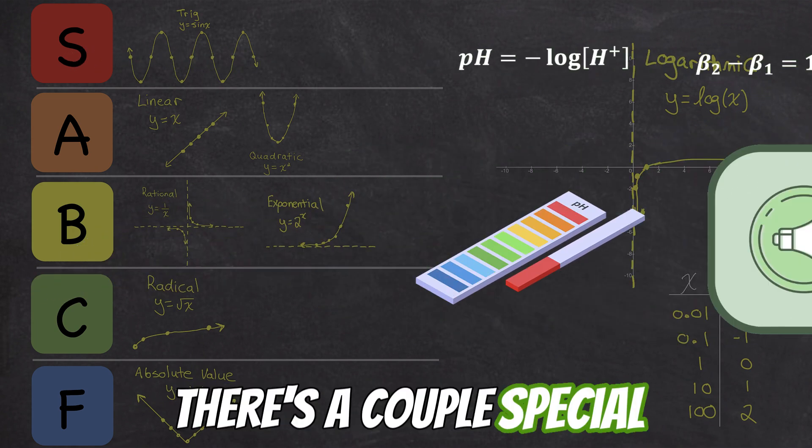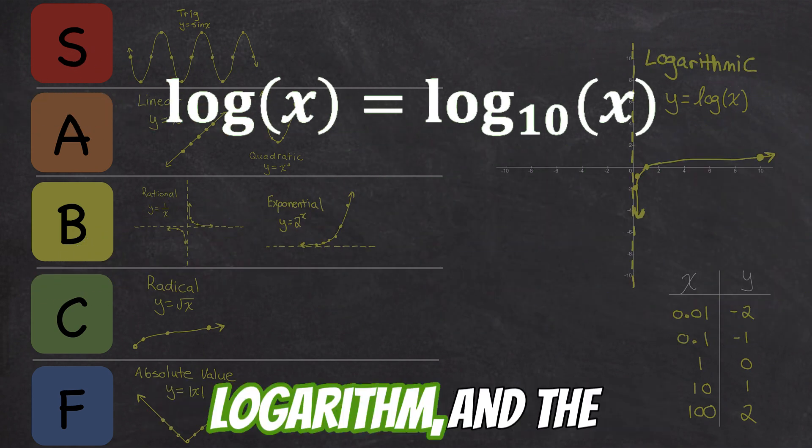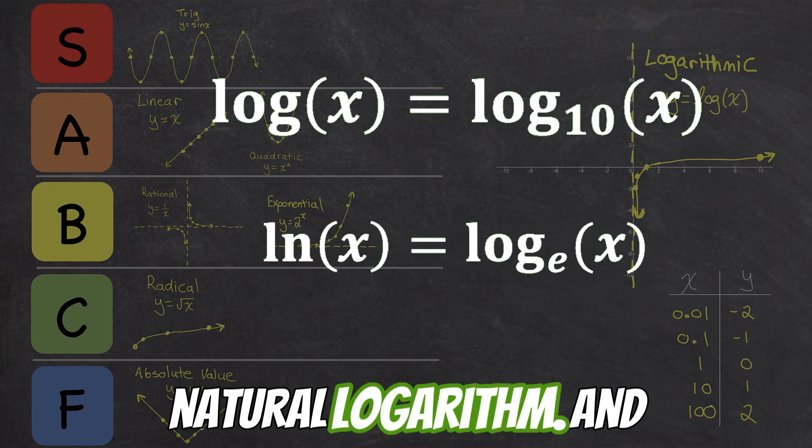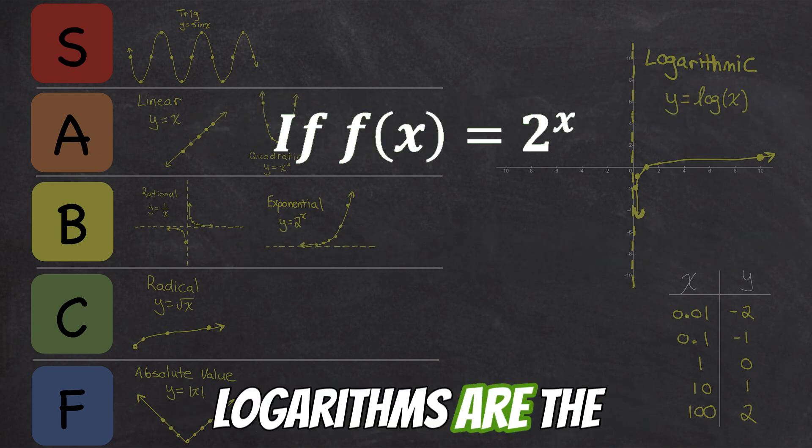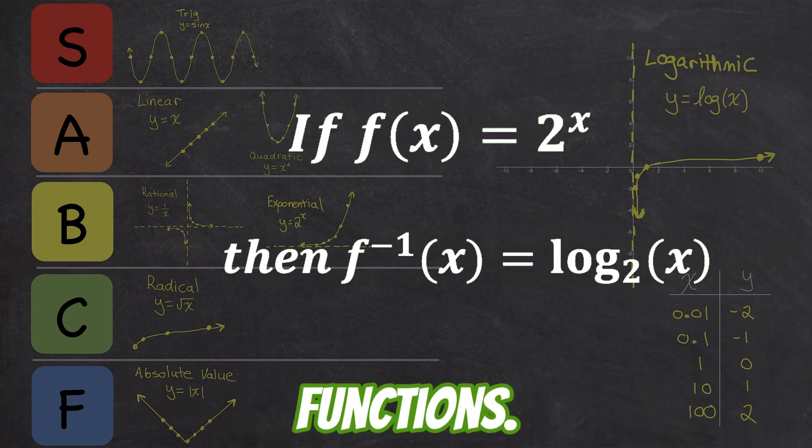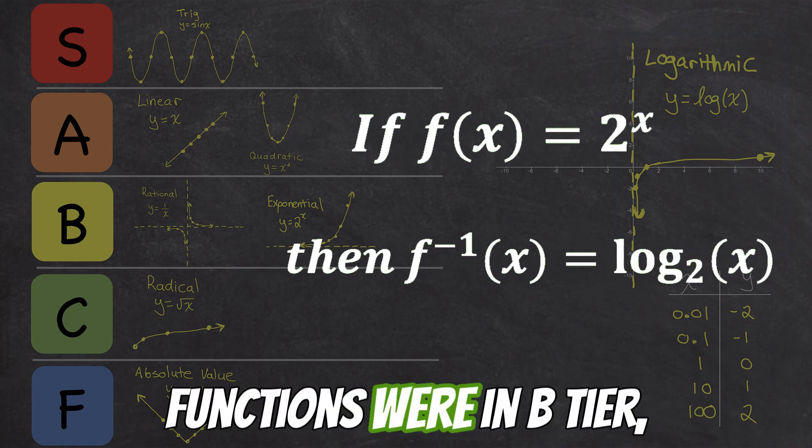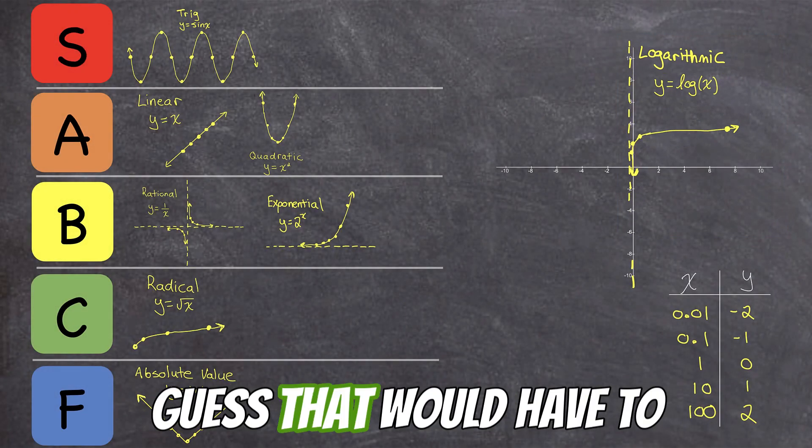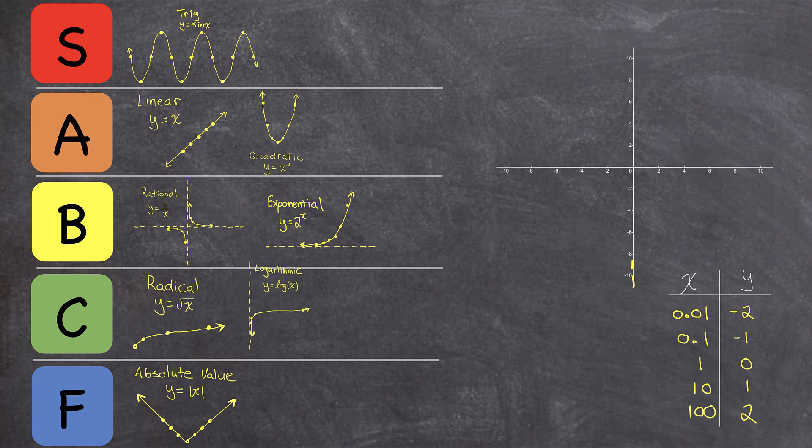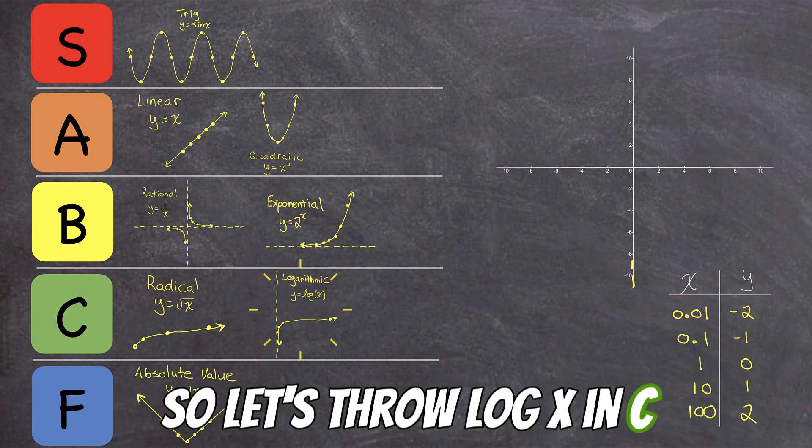There's a couple special logarithms you have to know about, the common logarithm and the natural logarithm. And you should know that logarithms are the inverse of exponential functions. Since exponential functions were in B-tier, the inverse of B-tier, I guess that would have to be C-tier. So let's throw log x in C-tier.